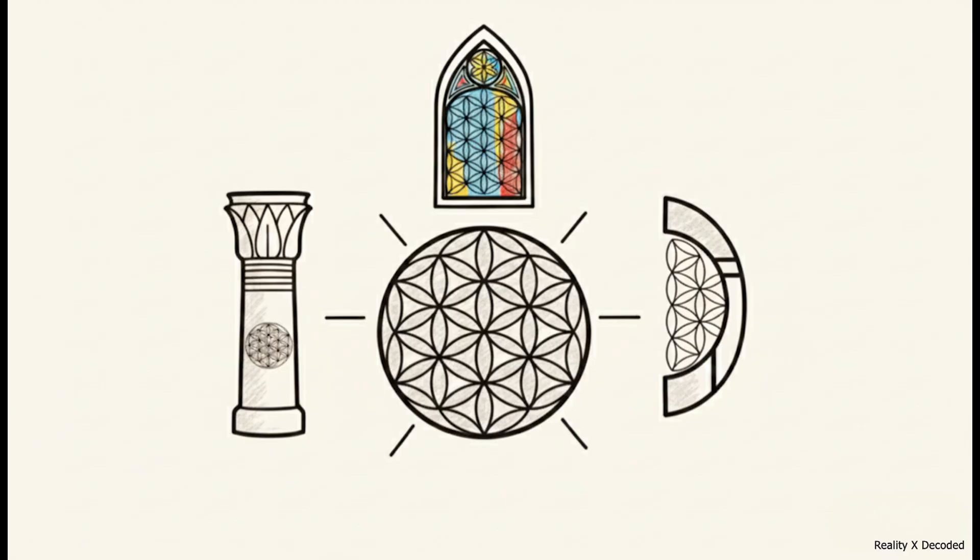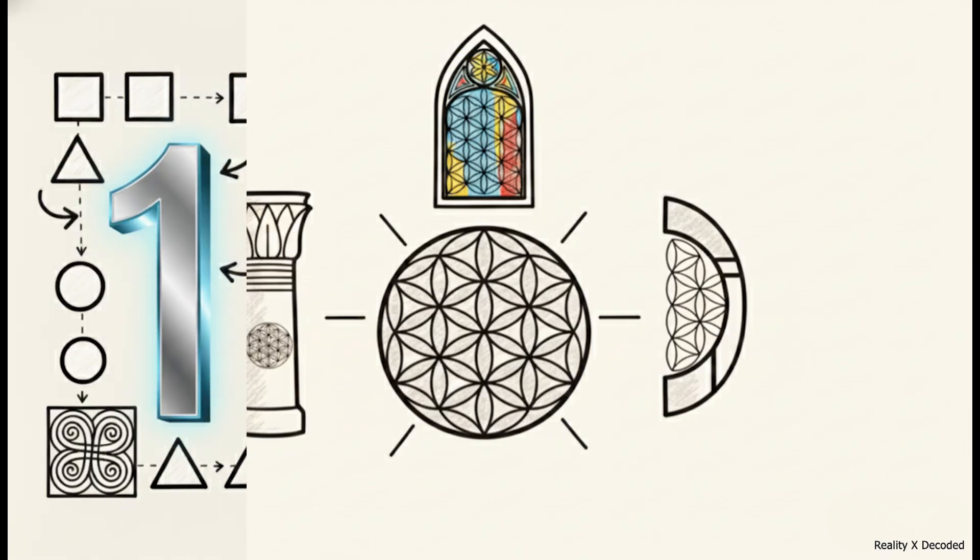I bet you've seen this pattern somewhere before. It shows up everywhere, on the walls of Egyptian temples, in the stained glass of medieval cathedrals. Some people call it sacred. Others call it mystical. But here's the thing you gotta remember. Before anyone decided it meant anything, it was just geometry. And that's where the real story starts.